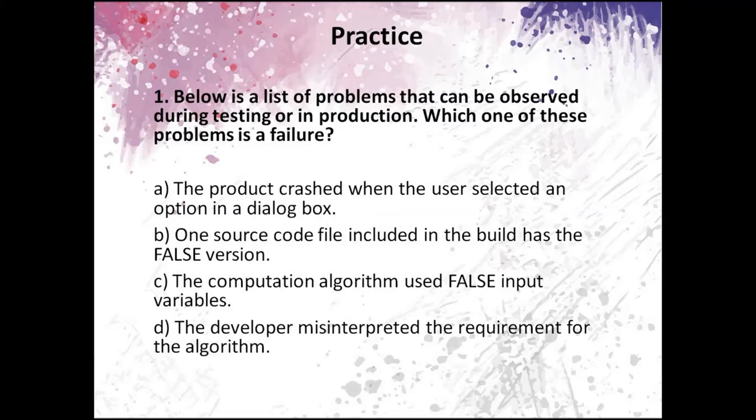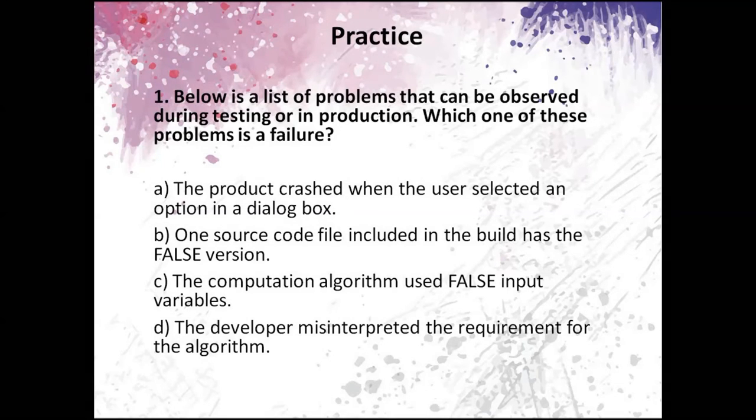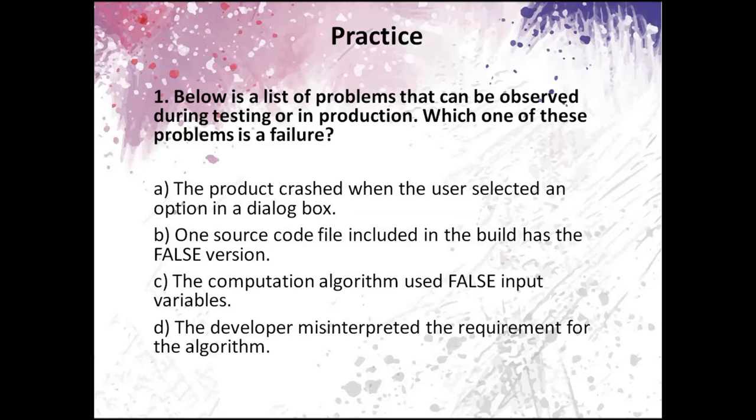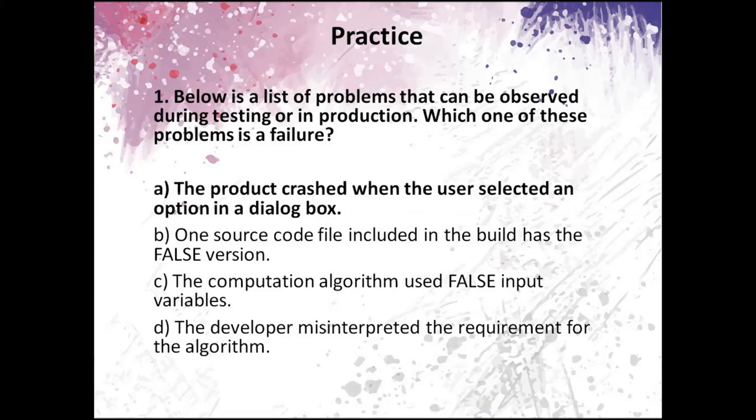Let's see the answer set. The product crashed when the user selected an option in a dialog box. So, it's obviously a failure. Next, one source code file included in the build had the false version. It is a defect, but it can cause a failure or not. So, it's not a failure. Next one, the computation algorithm used false input variables. It is the same. This code can never be executed. So, it's not a failure. The next one: The developer misinterpreted the requirement for the algorithm. So, developer made an error which leads to defect, but there is no failure in this example. The correct answer to this question is A. The product crashed when the user selected an option in a dialog box.